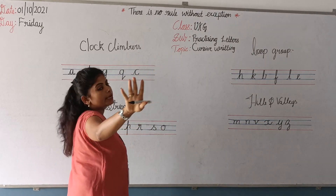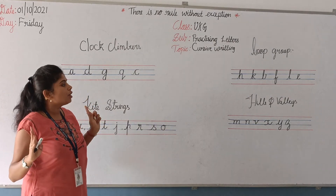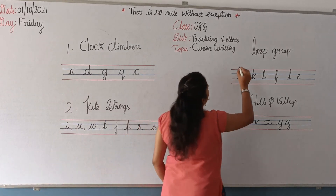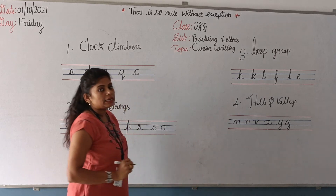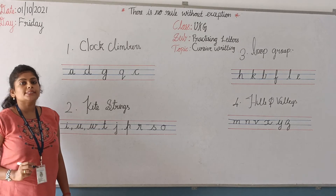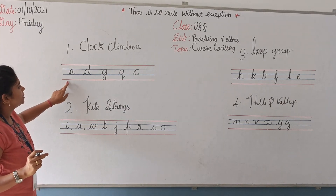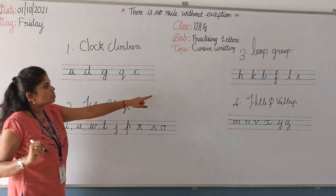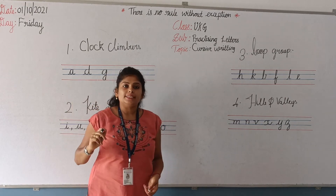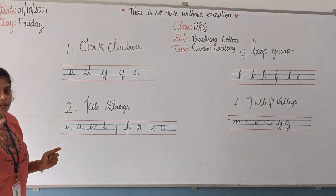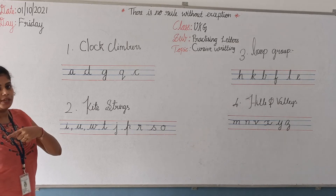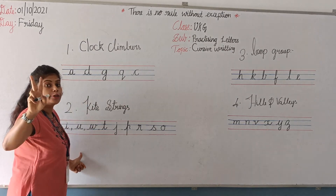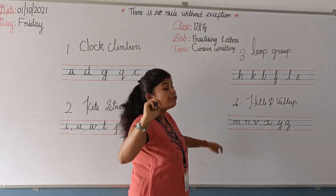There are four alphabet groups: clock climbers, kite strings, loop group, and hills and valleys. Now all 26 letters are covered. Please try to practice the letters. In your four-lines notebook, practice the first group on page one, second group on page two, third group on page three, and the fourth group on page four.